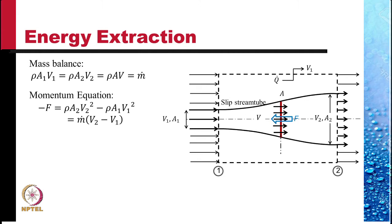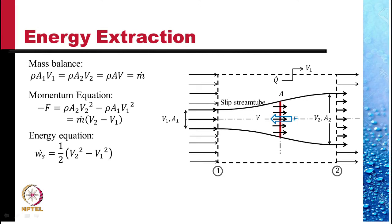We have the momentum equation minus F, the force that is applied on the fluid is rho A2 V2 square minus rho A1 V1 square and which can be written as m dot times V2 minus V1.